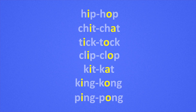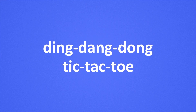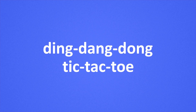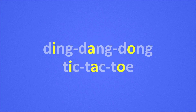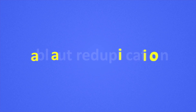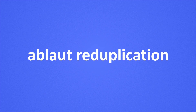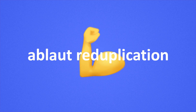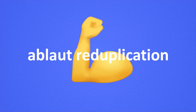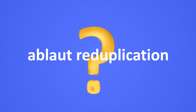This structure is made clearer with longer words like tic-tac-toe or ding-dang-dong. The order is always I-A-O, and messing with this will never sound quite right. This is called ablaut reduplication, and while linguists acknowledge the strength of this rule, it's a little unclear as to why it happens.